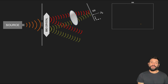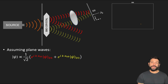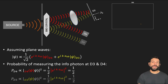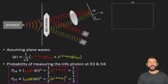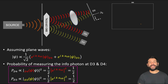For the particular case of assuming plane waves, the probabilities of measuring the photon hit D3 or D4 is always one half. In reality, this will obviously be different since the wave hitting the screen will probably be described by a more realistic wave function, like a Gaussian wave packet. So these probabilities will be described by expressions that vary as a function of y sub 0, but do not exhibit two-slit interference.